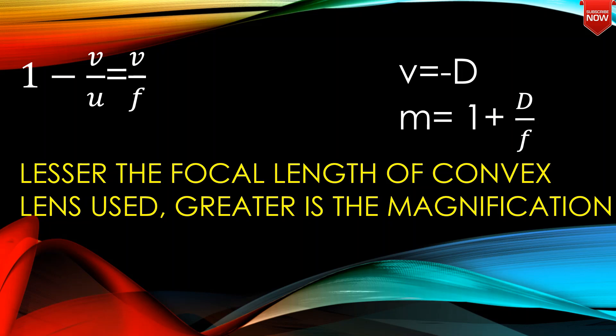V equals minus D, where D is the distance of least distance vision. Using Cartesian sign convention, V equals minus D. Substituting this, m equals 1 plus D by F.